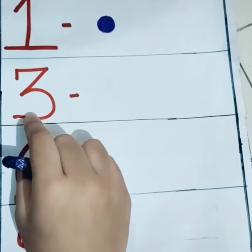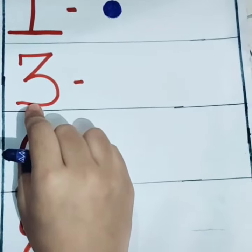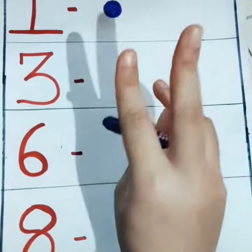Next, the given number is 3. So, what we will do? We will draw 3 dots.